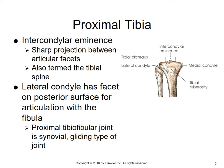The lateral condyle has a facet on its posterior surface for articulation with the fibula. There's an area on the lateral condyle that articulates with the fibula, and where it articulates forms the proximal tibial fibular joint. This joint is a synovial gliding type of joint.